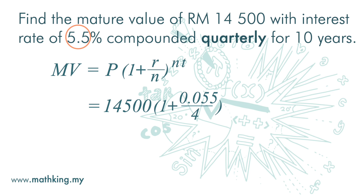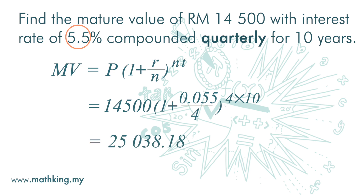For the time period n — n is the number of times it is compounded — it is 4 times a year, and the period is 10 years. The matured value after 10 years is RM25,038.18.